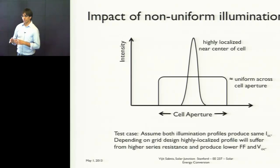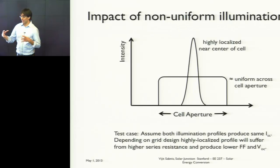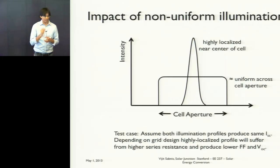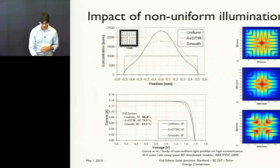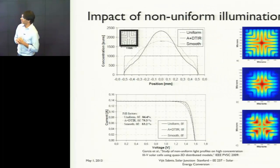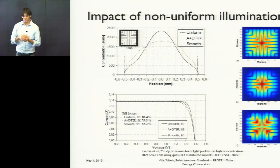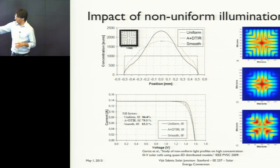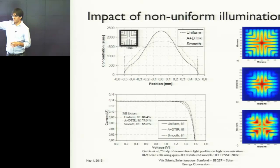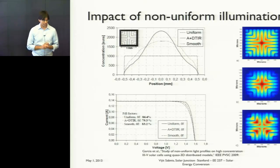Some systems focus the light down onto the solar cell to varying degrees — some give a nice even profile, and some give a very tight beam. Due to distributed resistance, if you focus the beam very narrowly on your solar cell, the distributed resistance loss increases, which manifests as a reduction in fill factor. That's a very important design consideration.